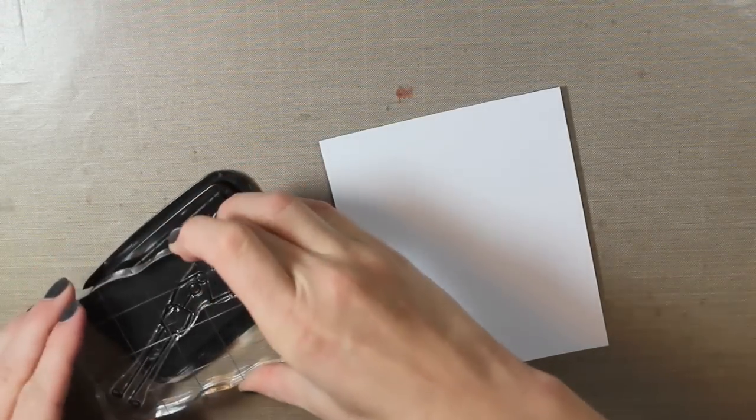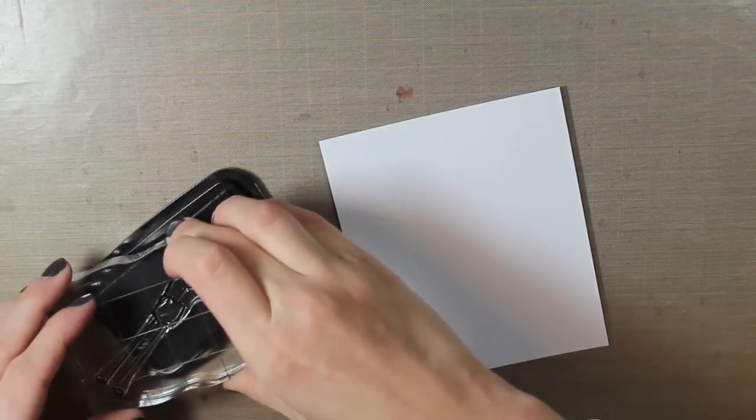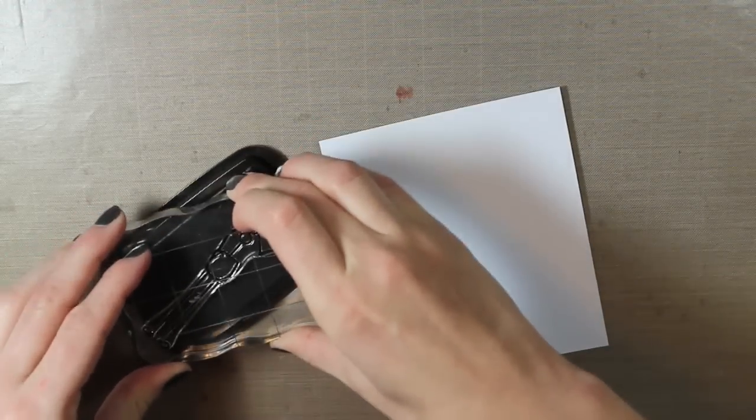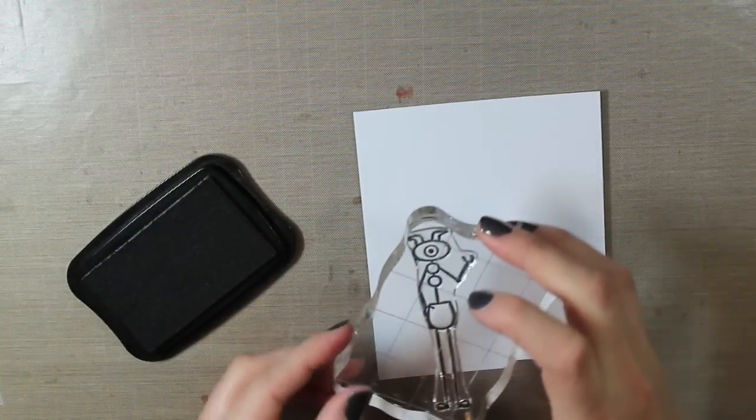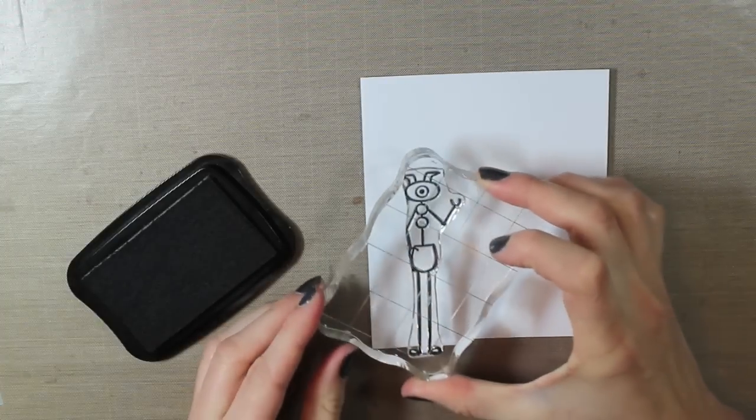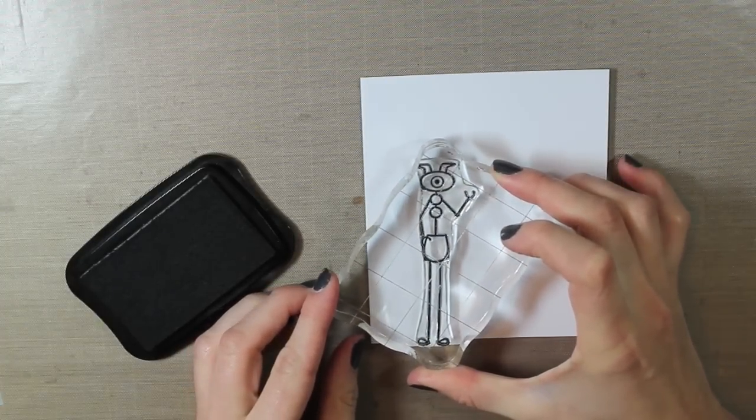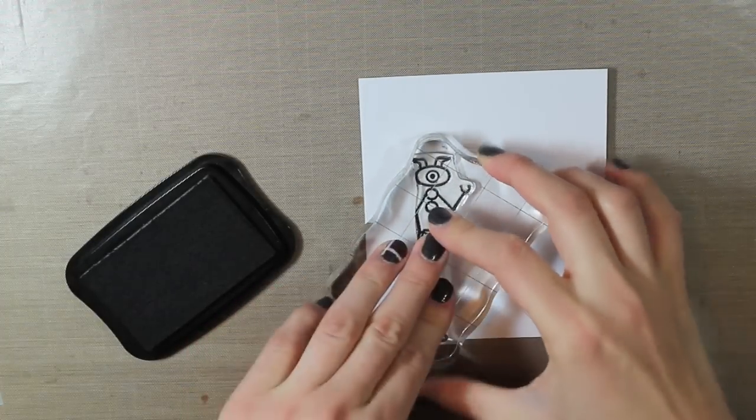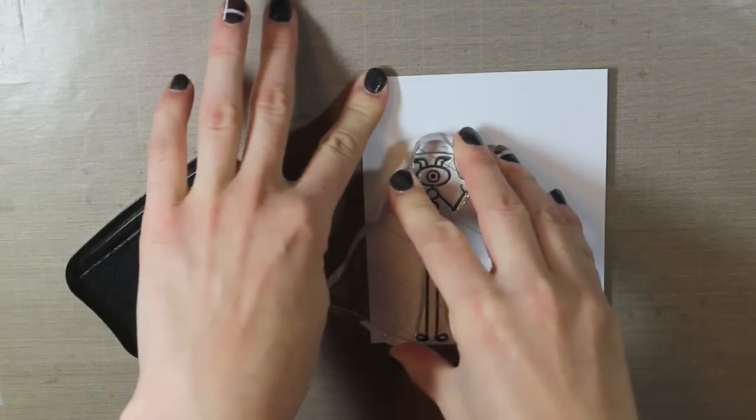I'm going to ink this up with my Tuxedo Black Memento ink. And I'm going to stamp this on a piece of Coordination's 110 pound card stock. And I'm going to stamp it in the bottom right hand corner. I'm going to be cutting off the top part of this. You'll kind of see what I mean in a minute here.